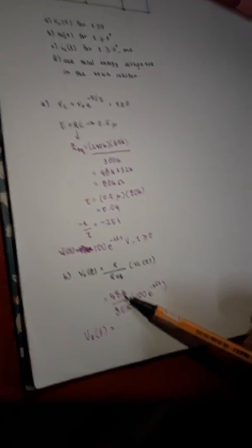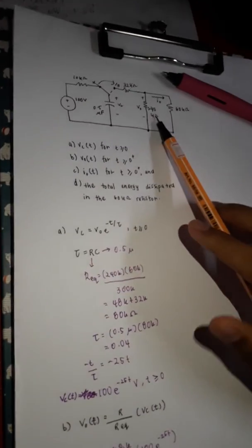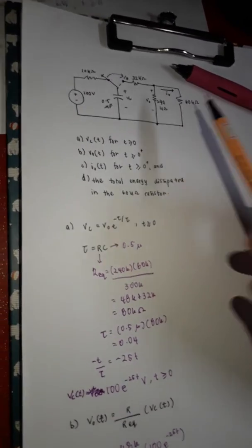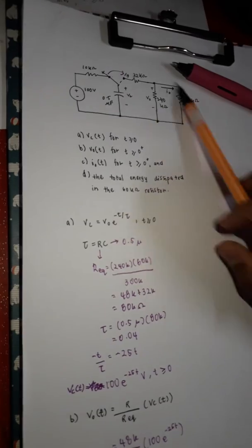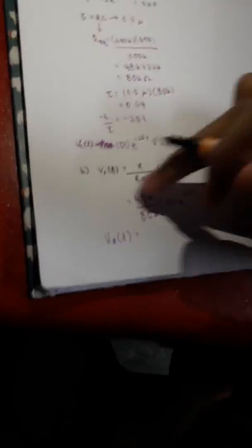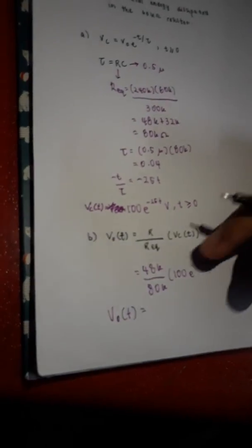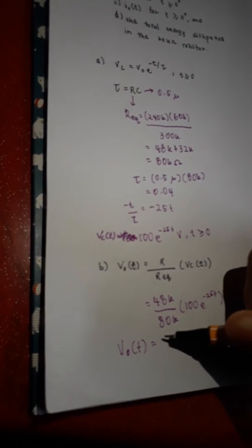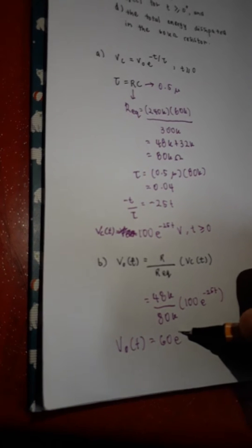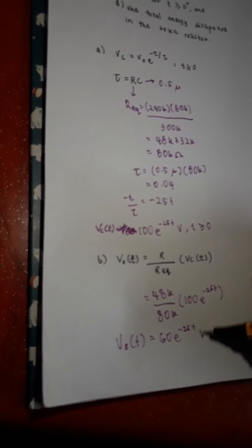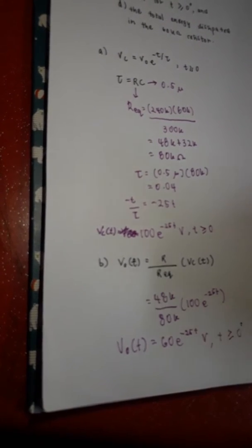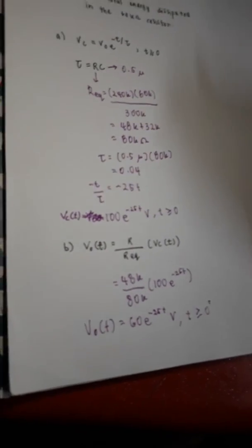But before that, how do we get this 48K? 48K is come from the parallel of 240K with 60K. As the V0 is here, so we must find the equivalent here. So, then, after we do the math for this equation, then we get 60 exponent negative 25T volt for T more than or equal to 0 positive. That's for the V.